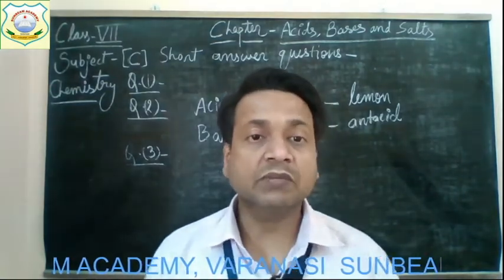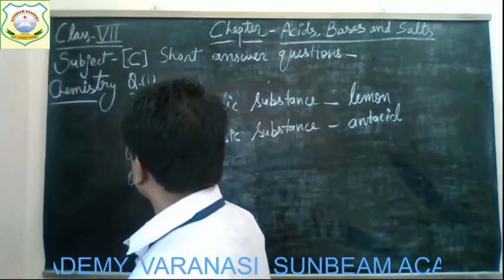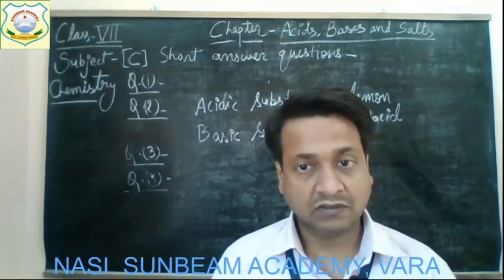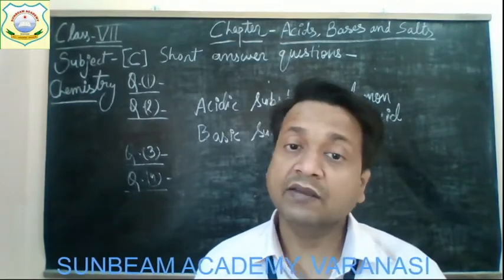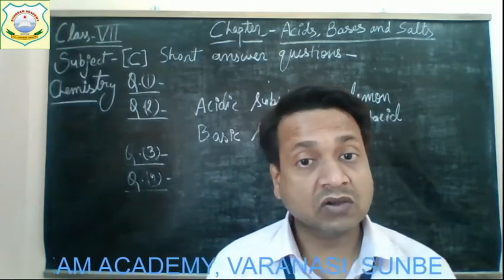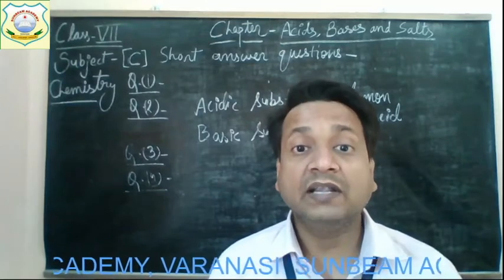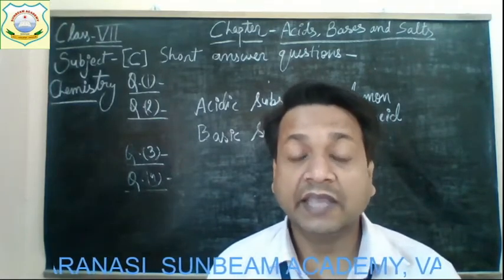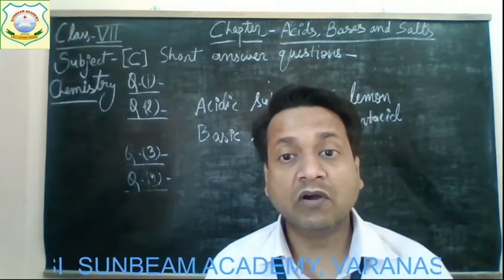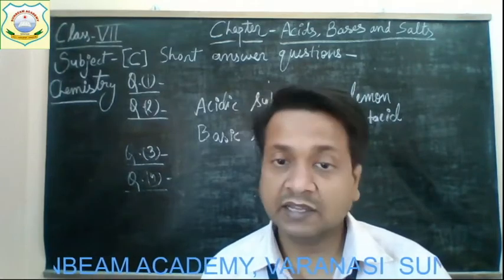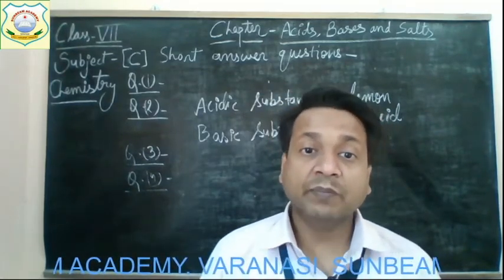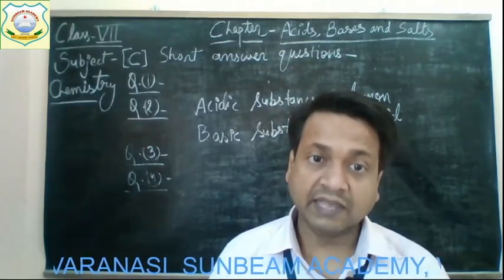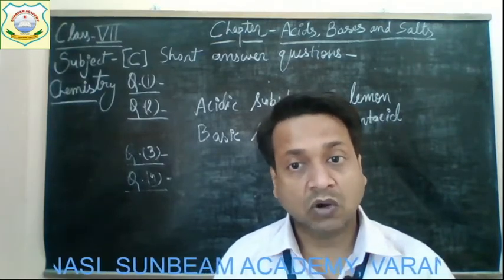Question number four: How can carbon dioxide be prepared from an acid? Carbon dioxide can be prepared when dilute acids react with carbonates, like calcium carbonate. The reaction forms a salt and carbon dioxide gas. So by adding dilute acids to carbonates like calcium carbonate, we get a salt and carbon dioxide gas.